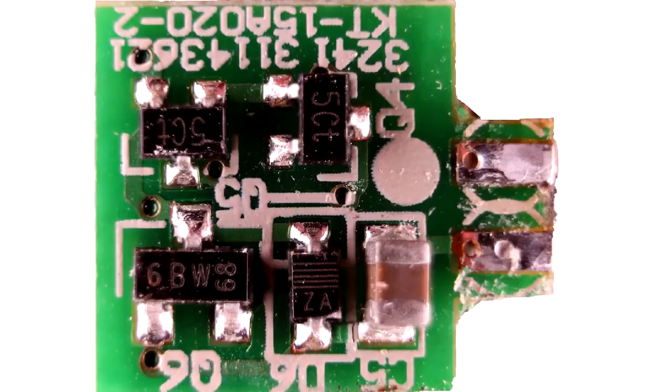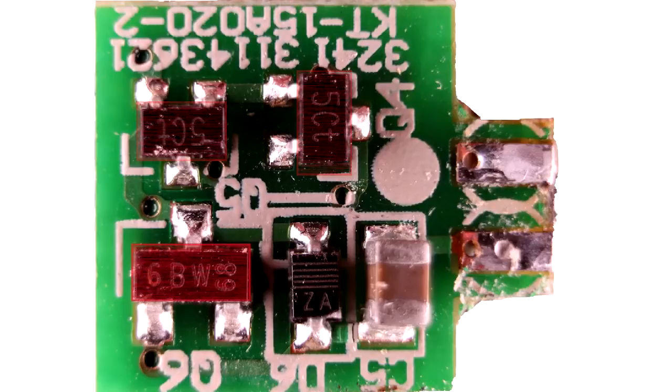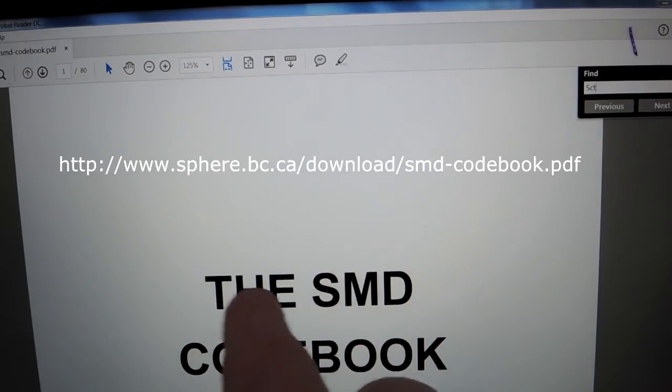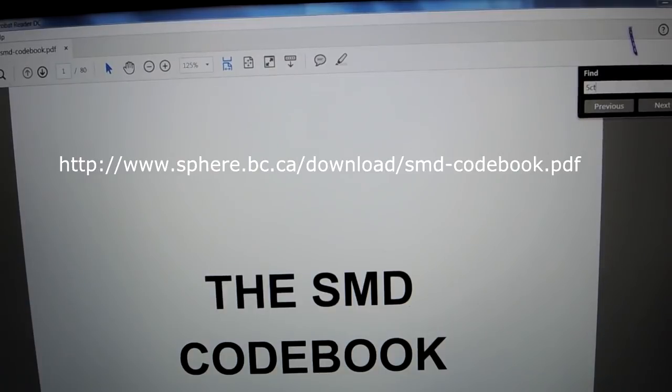So on this assembly you can see two SOT-23s, one marked 5CT, the other one marked 6B. And to sort that down you can use those surface mount codes and cross-reference them. There's at least three or four sources on the web that are quite good. I'm using the SMD code book. I'll show the link in my video description as to where you can find it.